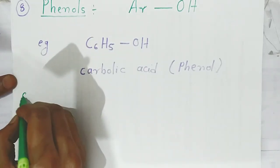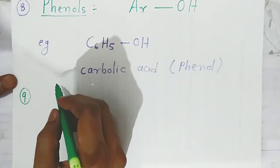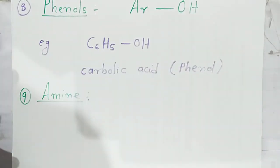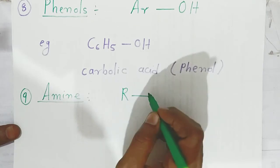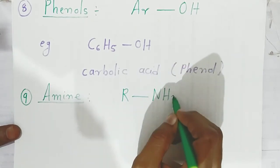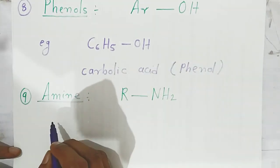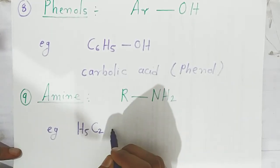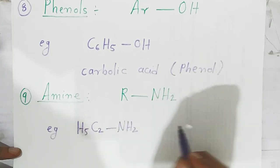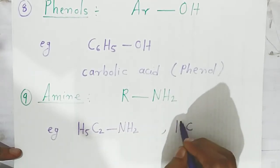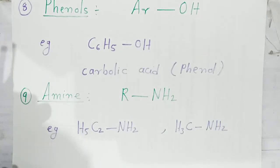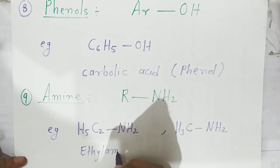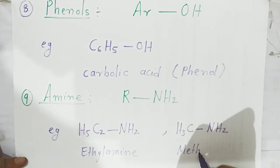The ninth functional group is amines. In amines, the hydrogen of the alkane is replaced by an amino group (–NH2). For example, if you put C2H5 with NH2 it is ethylamine; if you put CH3 with NH2 it is methylamine.